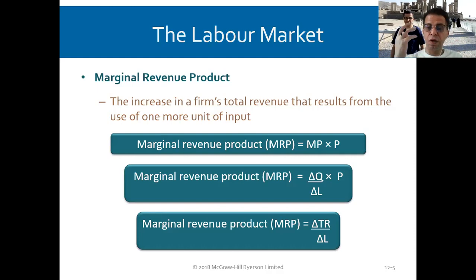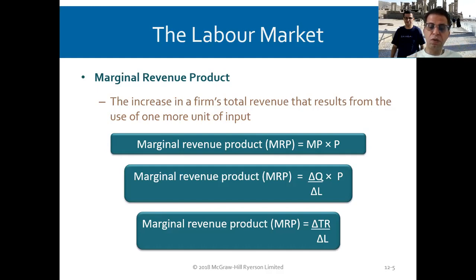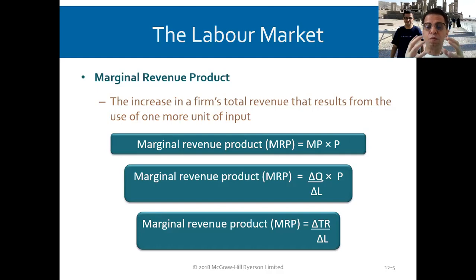The MRP, or marginal revenue product, equals marginal product multiplied by price. If I'm producing five units and add one more labor to produce seven, that's the marginal revenue product — the change in total revenue divided by the change in labor. So MRP equals the change in total revenue divided by the change in labor.